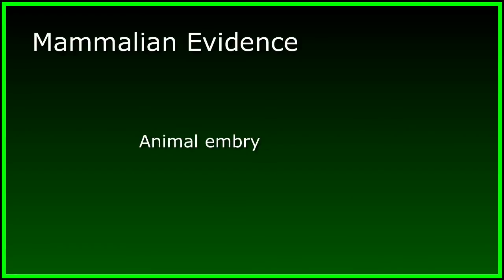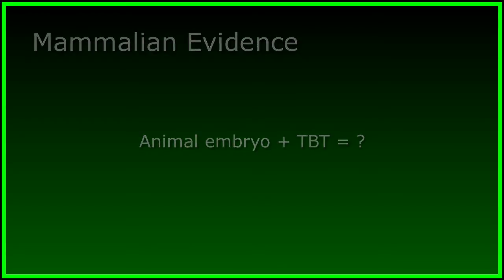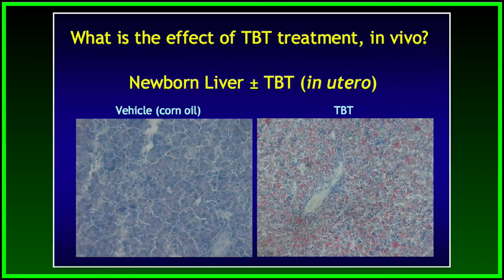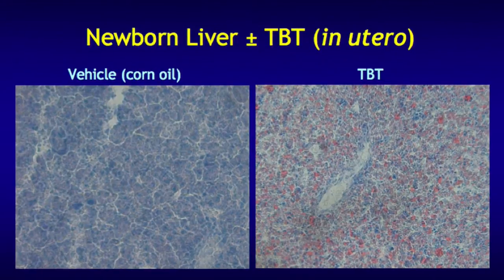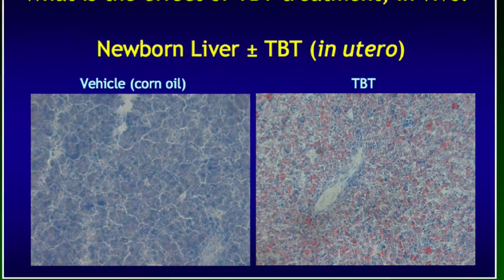In our experiments, we treated mice with tributyltin before they were born, and we looked at how much fat they had stored at birth, if any. A TBT-exposed embryo is born with a lot of fat already stored. For comparison, let's first look at a specimen from the liver of a normal newborn mouse, shown here on the left. These specimens are stained in a way that reveals fat as red. In a newborn mouse's liver, you don't see fat because they haven't stored any yet. But here on the right, you can see the liver of a newborn mouse that has been exposed to TBT, and it's already loaded with fat.